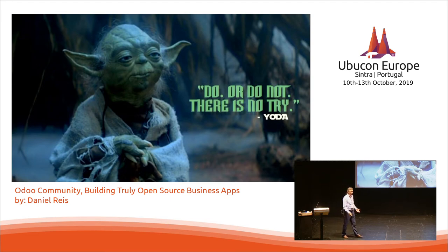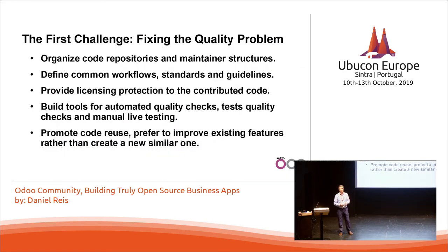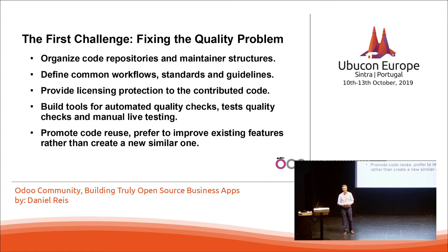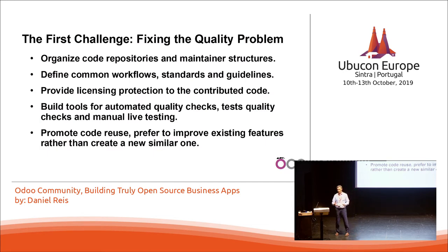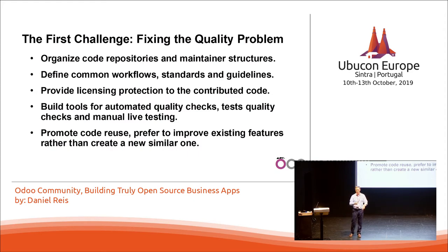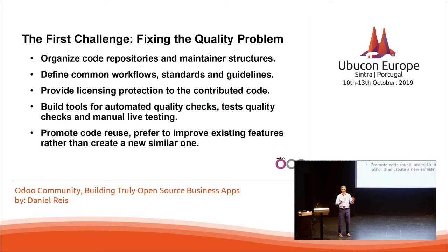So how do we deal with this heterogeneity and all these quality problems? Something had to be done. The first challenge was really fixing the quality problem — pragmatically, this was what was hurting most at that moment. What we did was move to GitHub and create structure, organizing the code into repositories because there are so many different areas we work on. At this point we have almost 200 repositories, each dedicated to an area such as accounting, logistics, verticals, and all kinds of business areas. Having everyone know where the code should be — that was number one.